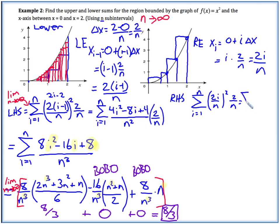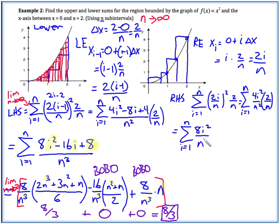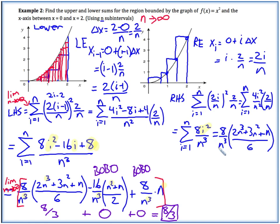Let's simplify: (2i/n)² gives 4i²/n², still times delta x 2/n. Distributing, we get the sum from i = 1 to n of 8i²/n³. Applying our summation formula for i², this becomes (8/n³) times (2n³ + 3n² + n)/6. This is our sum for the right-hand sum given n rectangles.